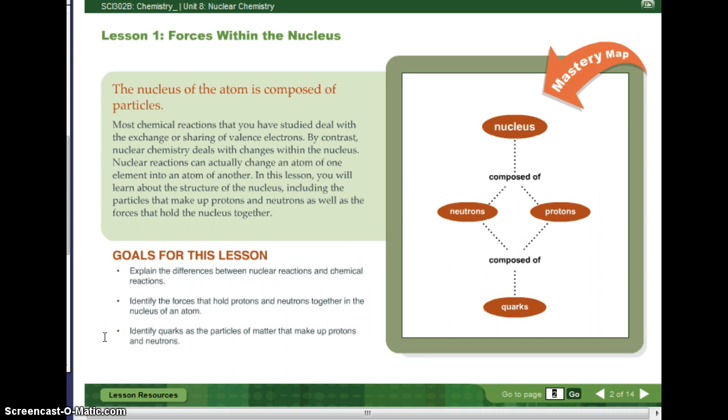So in every atom, we have the nucleus. Inside the nucleus, we have neutrons and protons. But neutrons and protons are actually composed of something smaller called quarks.